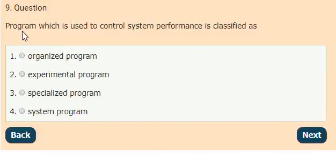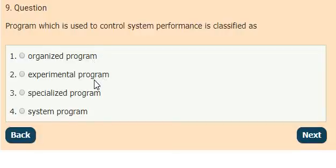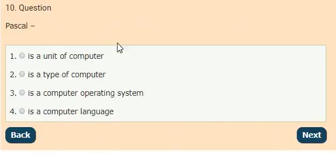Question 9: A program which is used to control the system performance is classified as options: organized program, experimental program, specialized program, system program. The answer is option 4, system program.